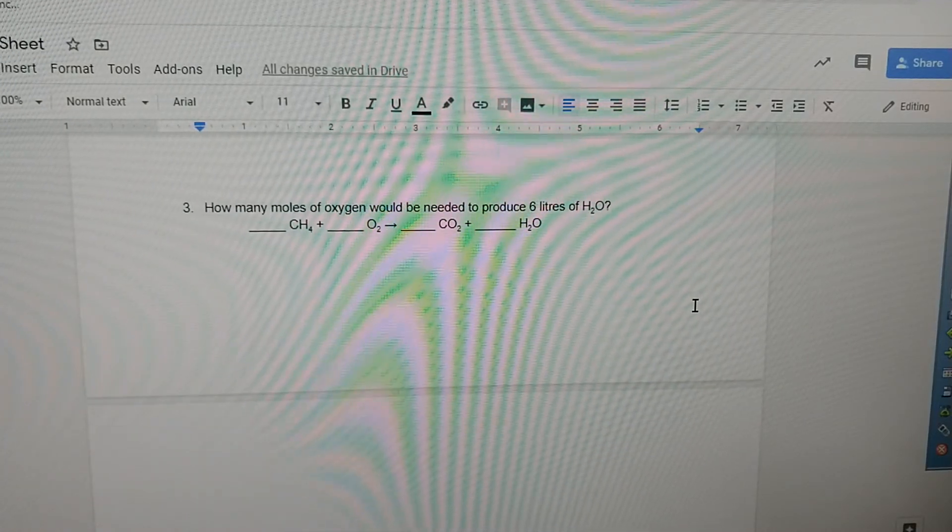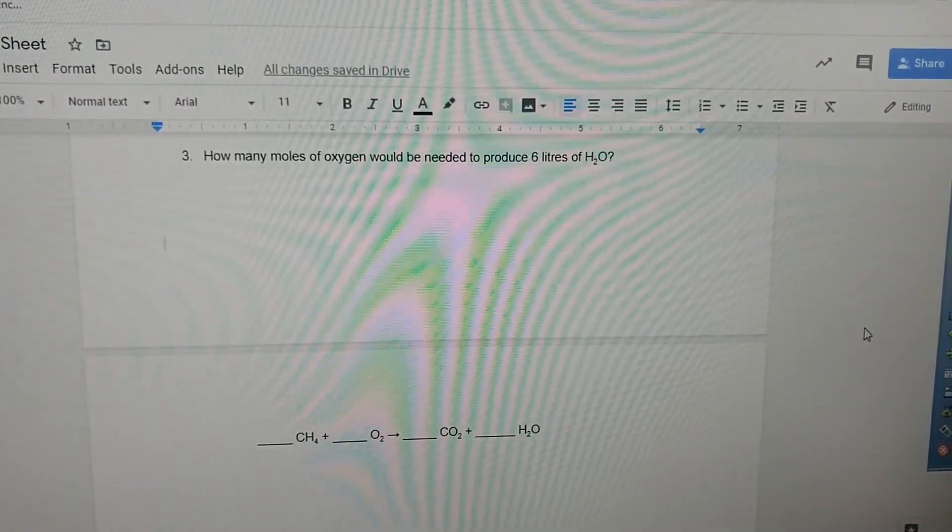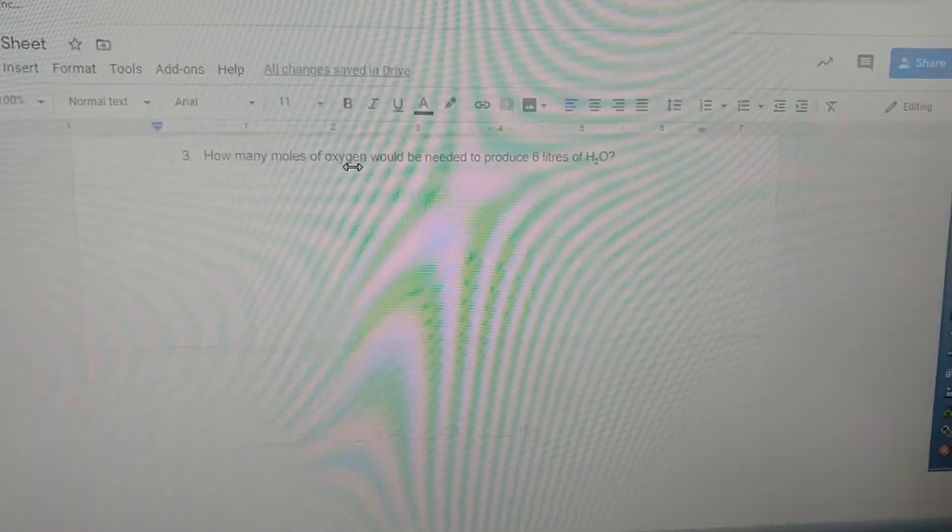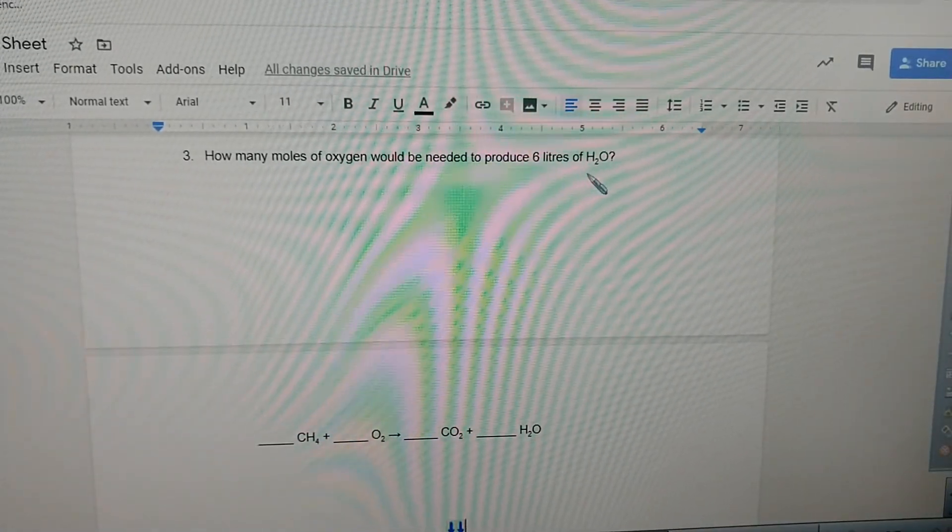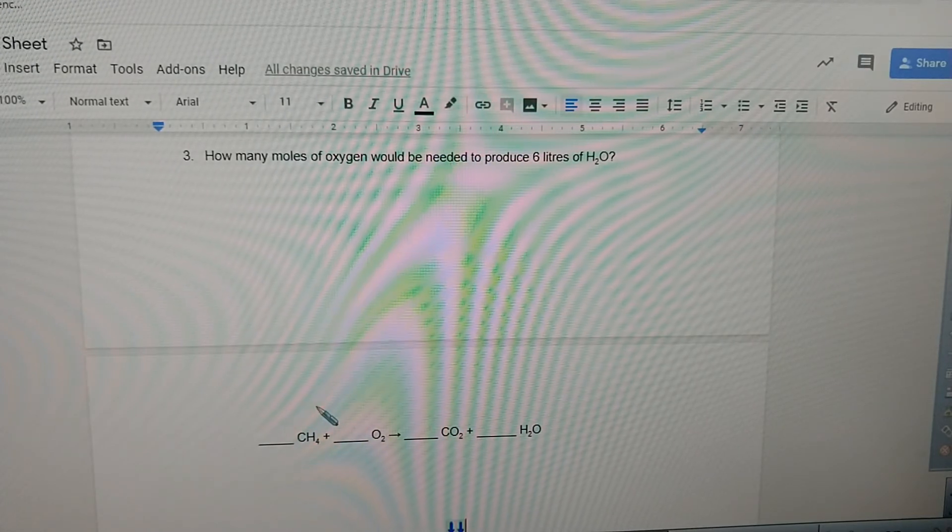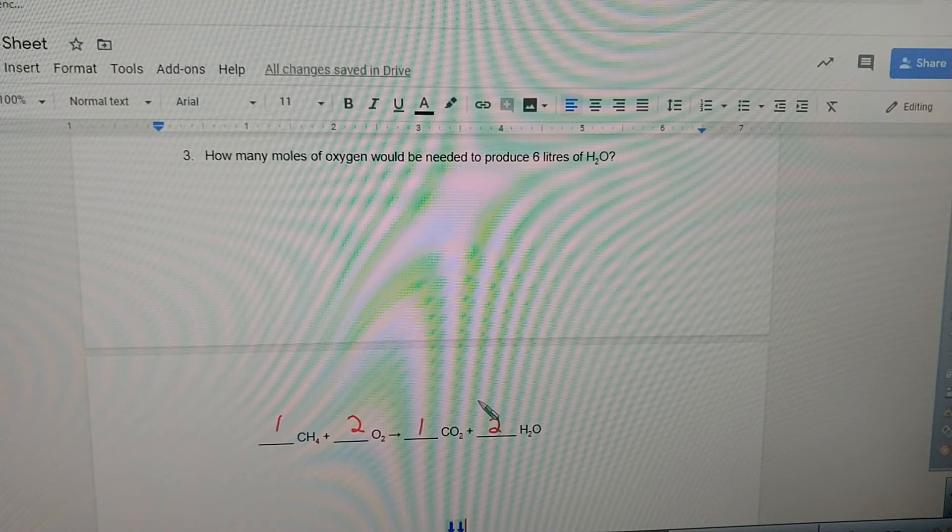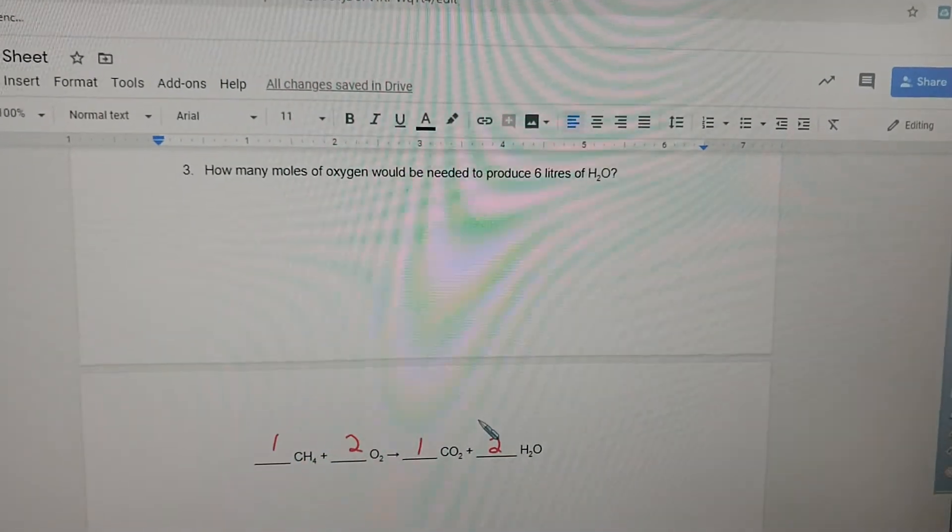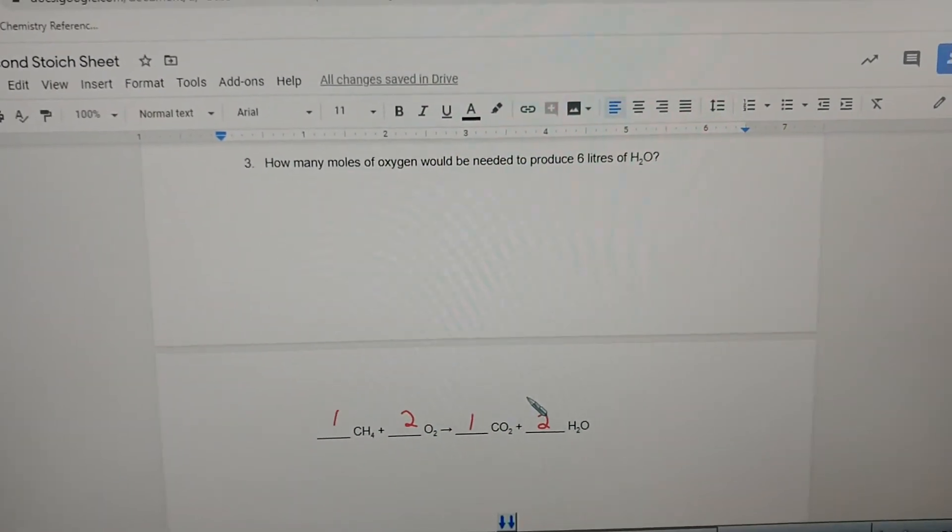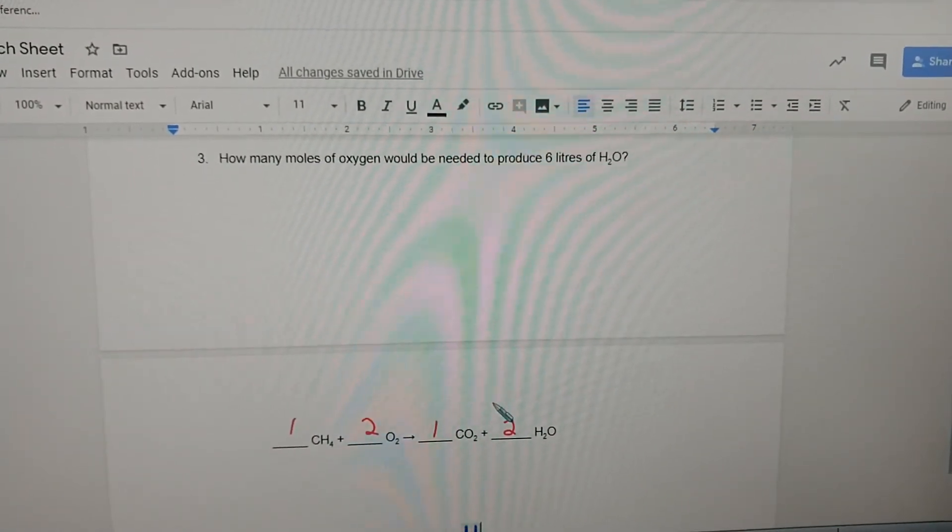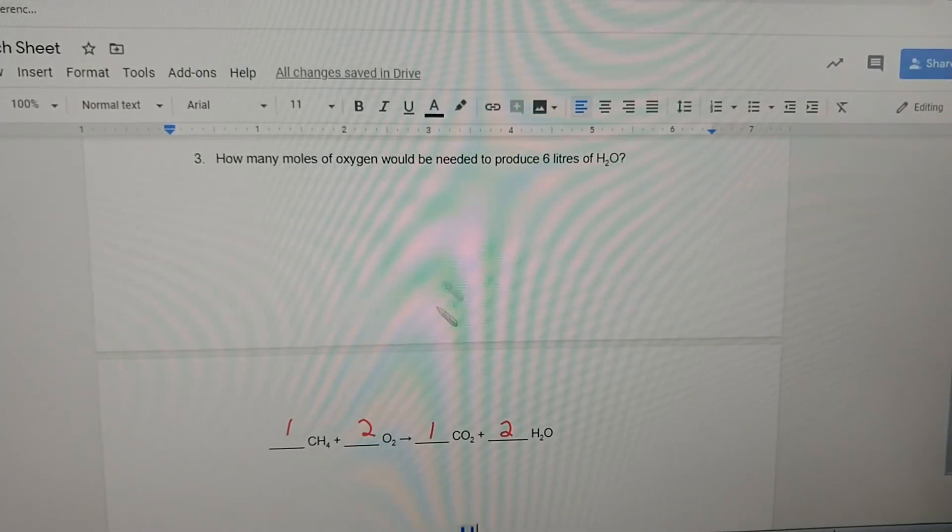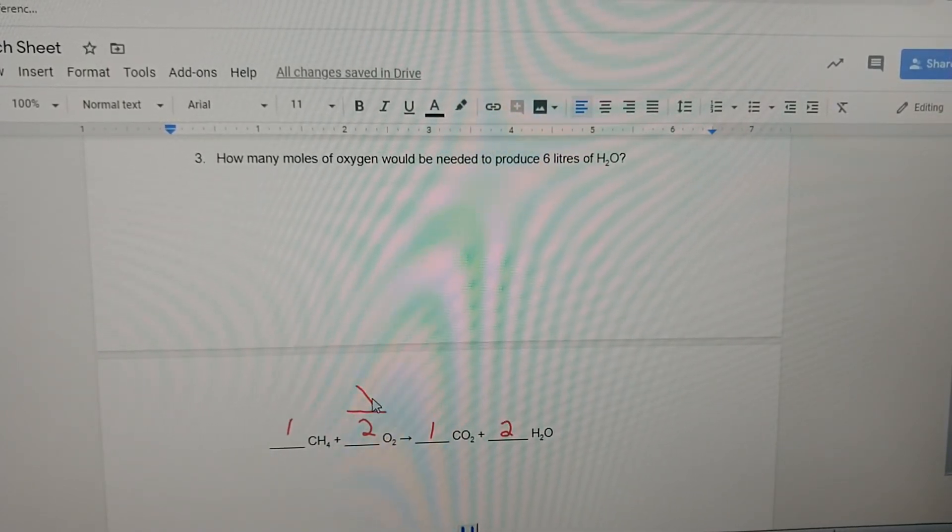I moved the next one around so I have more room to work. How many moles of oxygen would be needed to produce six liters of water? We've got to balance this. I think we're back again at one, two, one, two. Now we've balanced it.